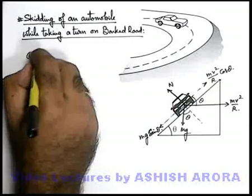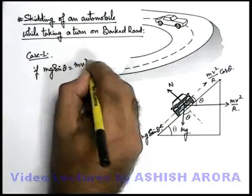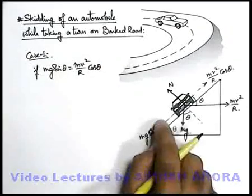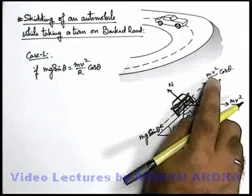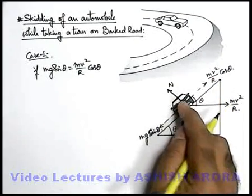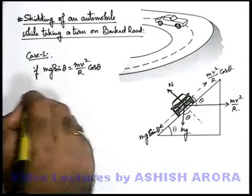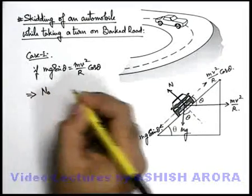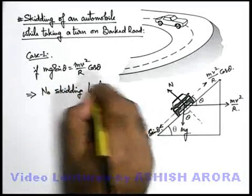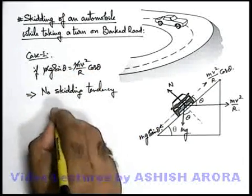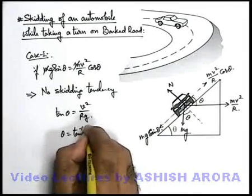Now we discuss various cases. Case one: if mg sinθ equals mv²/r cosθ — these are the two forces acting on the automobile along the direction of the road. If mg sinθ and mv²/r cosθ are equal, the car will not have any tendency of skidding, neither in the downward direction nor in the upward direction. So there will be no skidding tendency. Here m cancels out and on solving we get tan θ = v²/rg, or θ = tan⁻¹(v²/rg).